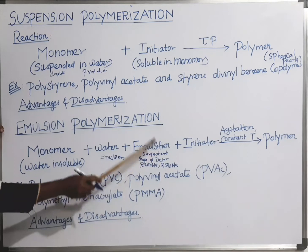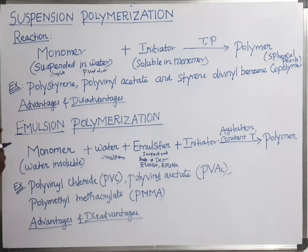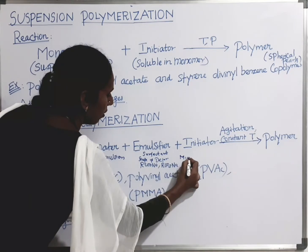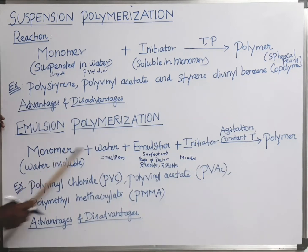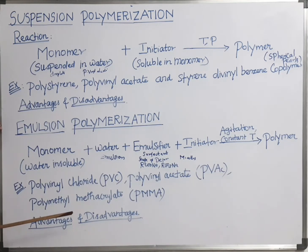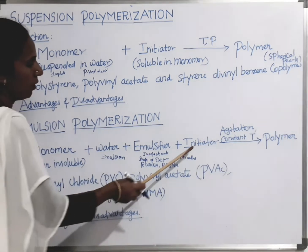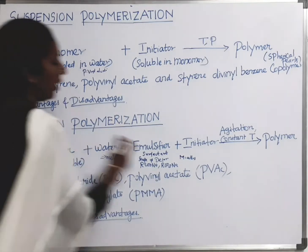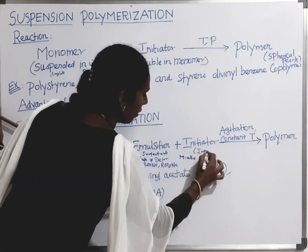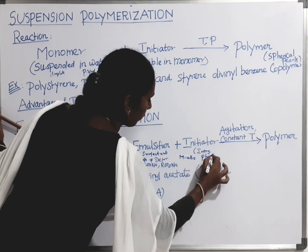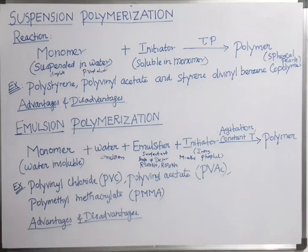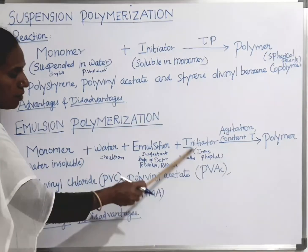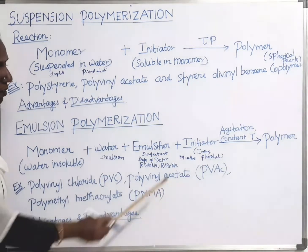Agitation is performed, and the surfactants react with the monomer droplets to form micelles. Micelles are aggregations of molecules in a colloidal solution. In the next step, the initiator — inorganic phosphates — is added. The initiator reacts with the micelles and the polymerization process occurs inside the micelles.